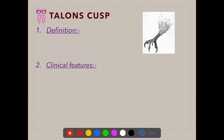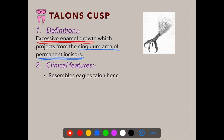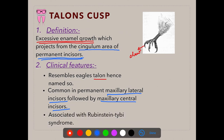Coming to the next developmental disturbance — talon's cusp. Talon's cusp is an excessive enamel growth which projects from the cingulum area of permanent incisors. It resembles an eagle's talon, hence it is named so. It is common in permanent maxillary lateral incisors, followed by maxillary central incisors. When associated with maxillary lateral incisors, it is usually unilateral.